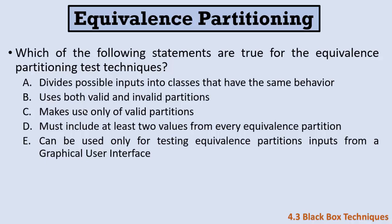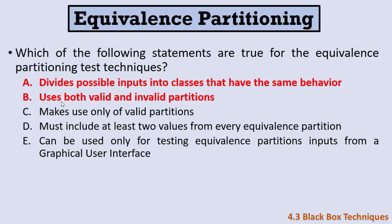Statement D — it must include at least two values from every equivalence partition — is wrong; we only need one value per partition. Statement E — it can only be used for inputs from a graphical user interface — is also wrong; it can be used for anything that can be divided into partitions, including time, code, and more. The correct answers are A and B.